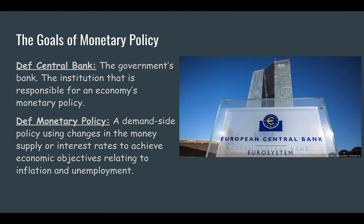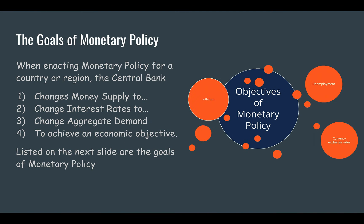It says money supply or interest rates. Changes in the money supply cause changes in interest rates, which cause changes in aggregate demand, and changes in aggregate demand can be used to achieve an economic objective. The main purpose of the central bank — and I'll repeat this over and over again — is to control inflation, but it can also be used to affect unemployment.